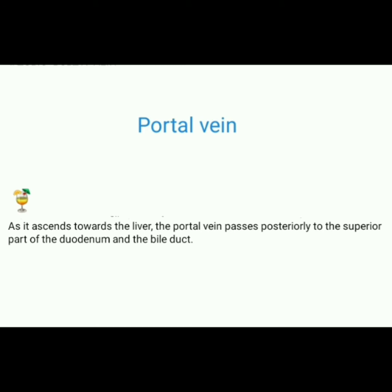After that, the portal vein ascends towards the liver. The portal vein passes posteriorly to the superior part of the duodenum and the bile duct.